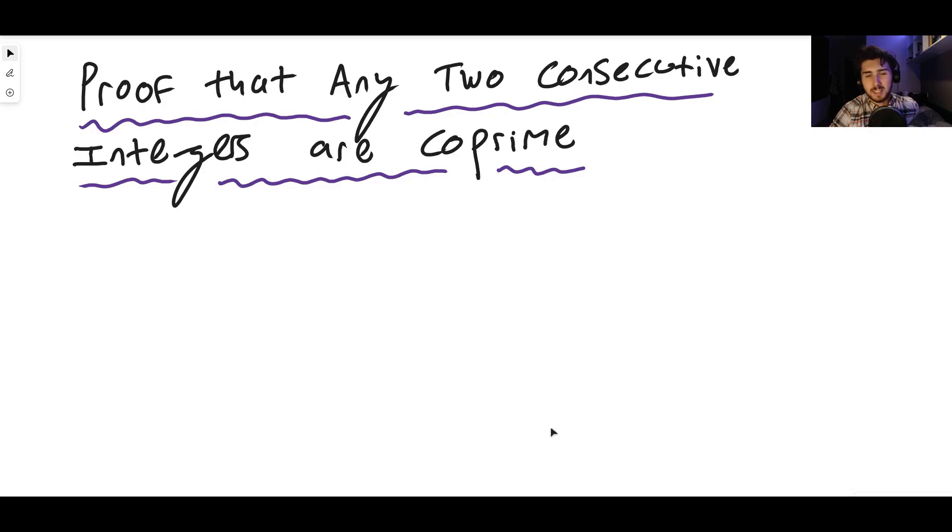So what this really means is take any two consecutive integers, they do not share any prime factors. It doesn't matter what the integers are. If they're consecutive, if the difference between them is just the number one, then they're always going to be coprime.